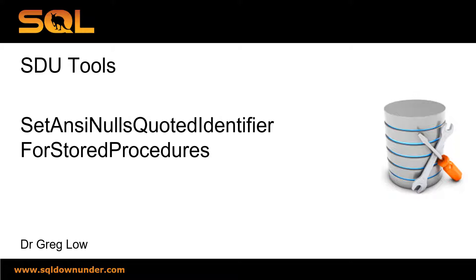Where I came across this problem was working on a system where I was setting up transactional replication, and the replication procedures — some were set with ANSI Nulls on, some were set with it off — based upon the source system where they had inconsistently defined the tables. I wanted an easy way to go through and just fix them all. So let's take a look.